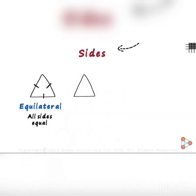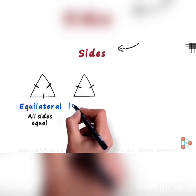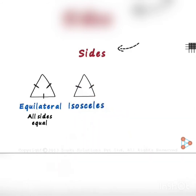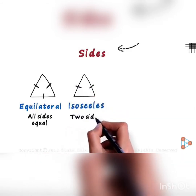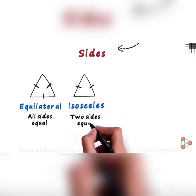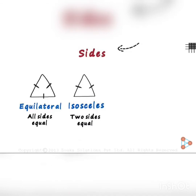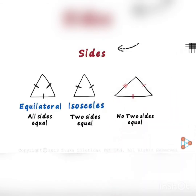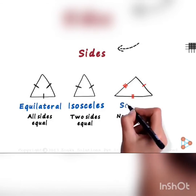The next type is the isosceles triangle. If a triangle has two sides equal, then it is called an isosceles triangle.